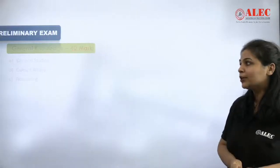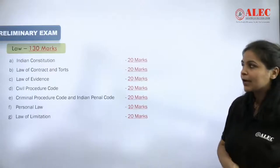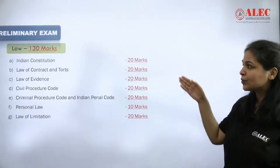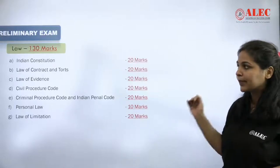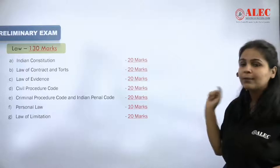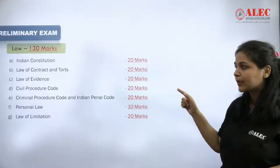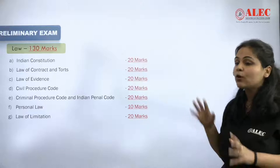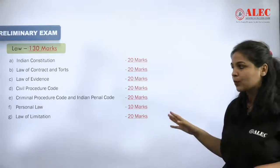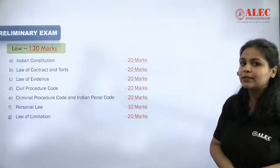Now let's continue to the Law part, which is 130 marks. The subject bifurcation is as follows: Constitution — 20 marks; Contract and Tort — 20 marks; Evidence — 20 marks; CPC — 20 marks; CRPC and IPC — 20 marks; Personal Law — 20 marks; and Limitation — 10 marks. Prepare accordingly.